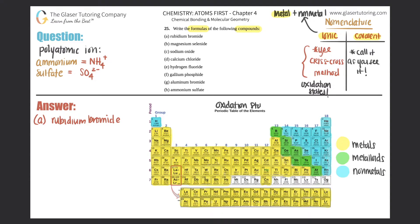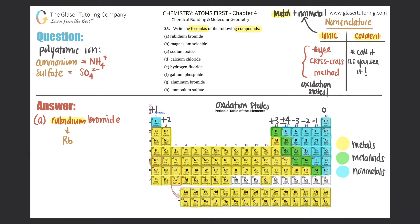Oxidation states follow a trend: group one is always +1, group two is always +2. Transition metals do not have this trend, so there are no numbers for those. Then it goes +3, ±4, and then backwards: -3, -2, -1, and 0. You use these oxidation states to crisscross and find out how many of each atom you need. Rubidium is Rb and it's in group one, so that's a +1.